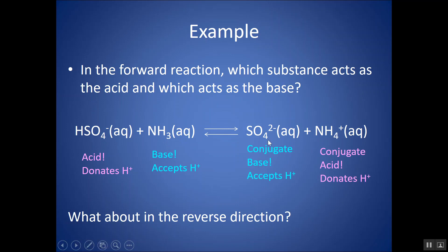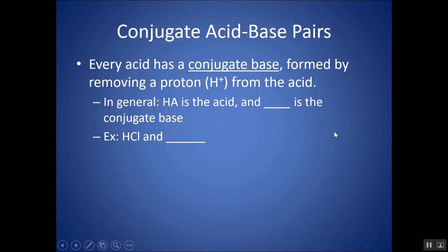In the reverse direction, these substances can also act as acids and bases. SO4 2- would turn into HSO4- by picking up an H+, so it acts as a base. NH4+ would turn into NH3 by donating an H+, so it acts as an acid. HSO4-/SO4 2- and NH3/NH4+ are both conjugate acid-base pairs.